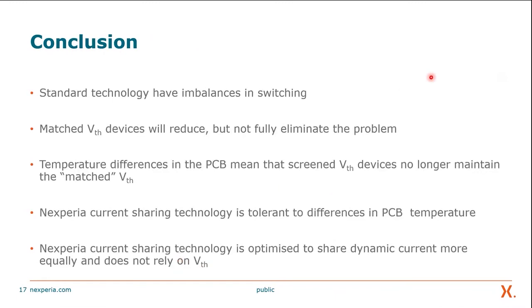In conclusion, standard technology has imbalances in switching, and matched threshold voltage — which is not a technology but a process — will reduce but not fully eliminate the problem. Temperature differences on the PCB mean that screened threshold voltage devices no longer maintain their matched threshold voltage, because if one runs hotter than the other their difference in threshold voltage will increase. NXPeria current sharing technology is tolerant to differences in PCB temperature and is optimized to share dynamic current more equally, as it does not rely on threshold voltage — and we showed all of this with the lab results presented earlier.